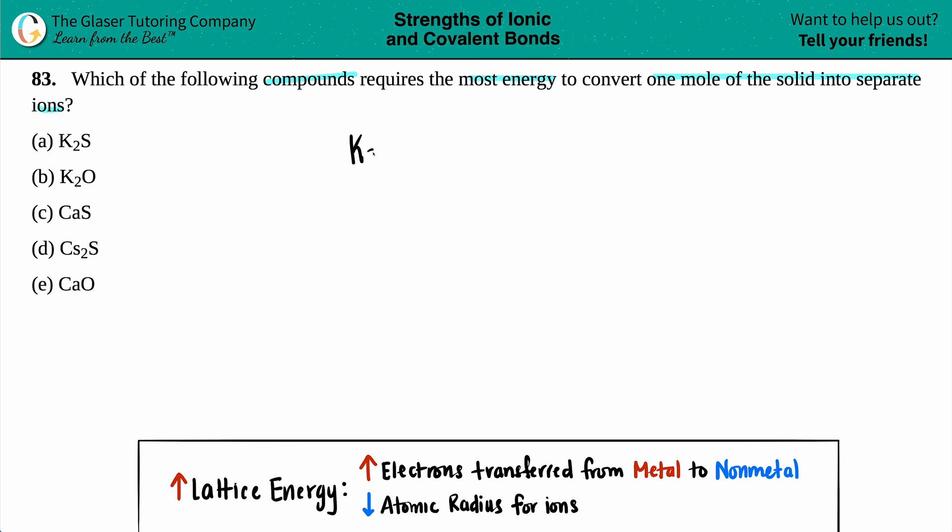So we have K2S. We got K2O. Beautiful. We have CaS. Cs2O and CaO. Now, in this case, the states don't really matter because whatever the highest amount, whether you're in a solid phase or in a gaseous phase, it doesn't make a difference. The only thing that really matters is what are those ions.